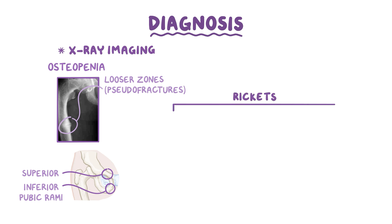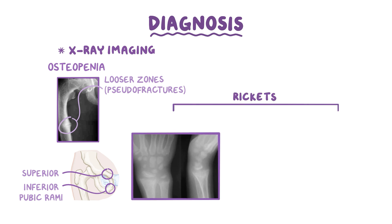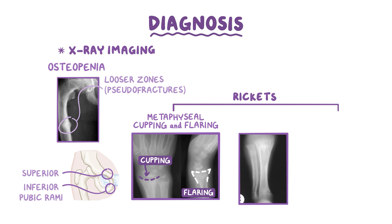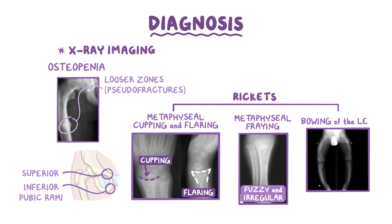In rickets, an x-ray image of the wrist and long bone metaphyses might demonstrate metaphyseal cupping and flaring. With metaphyseal cupping, the edges of the metaphysis widen laterally, like flared jeans, and the metaphysis itself drops inwards towards the diaphysis, which makes it look a bit like a cup. Another x-ray finding in rickets is metaphyseal fraying, where instead of the metaphyseal surface appearing smooth, it appears fuzzy and irregular. Finally, another x-ray finding with rickets may be bowing of the legs.